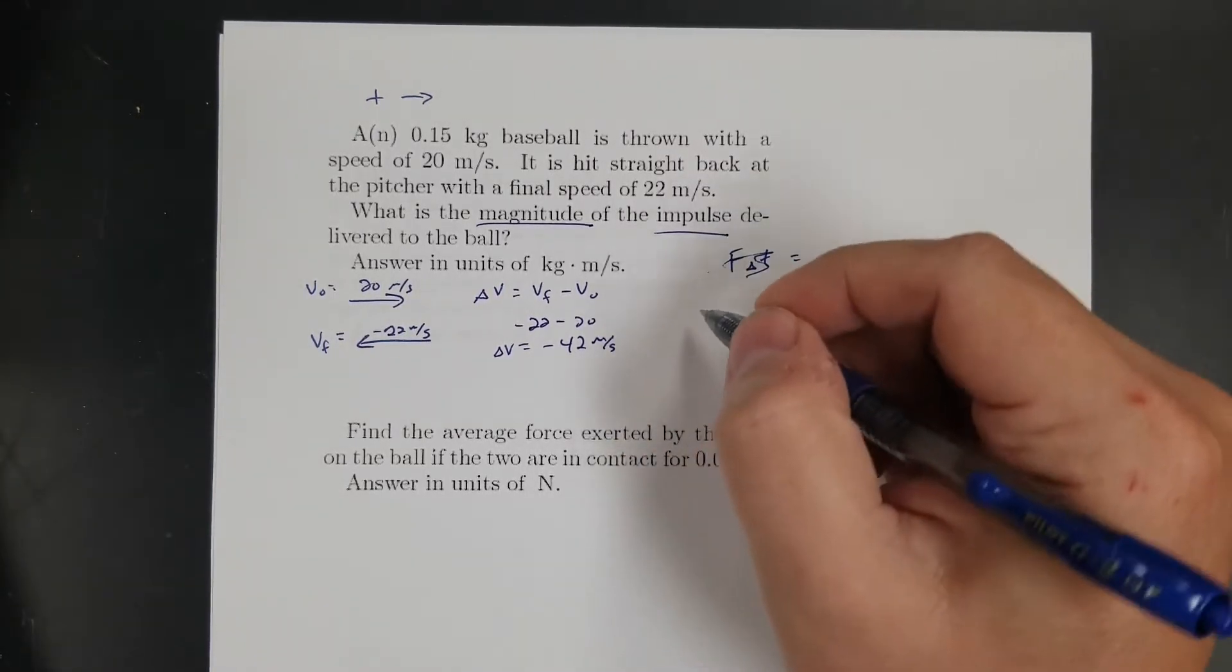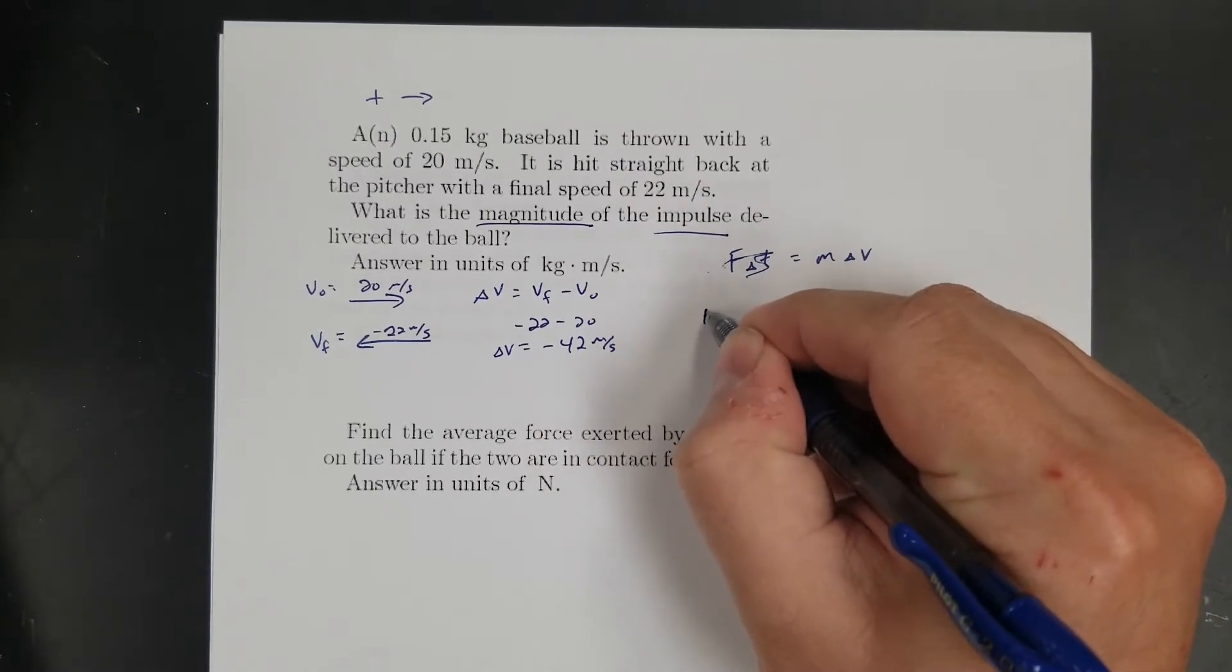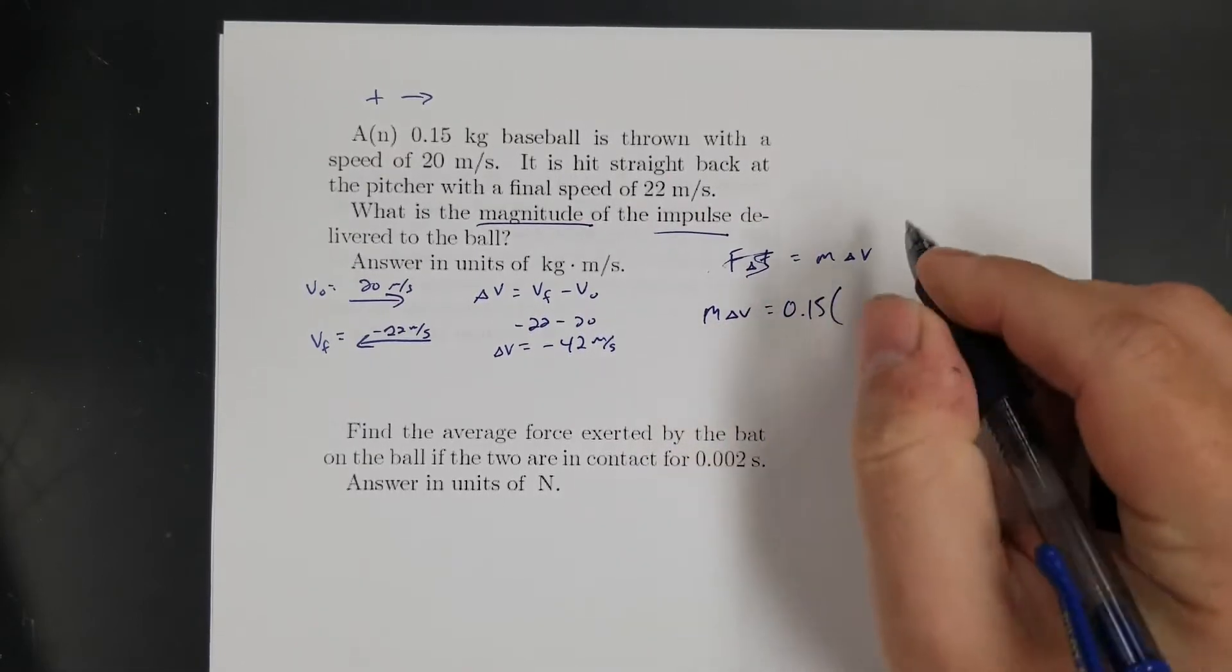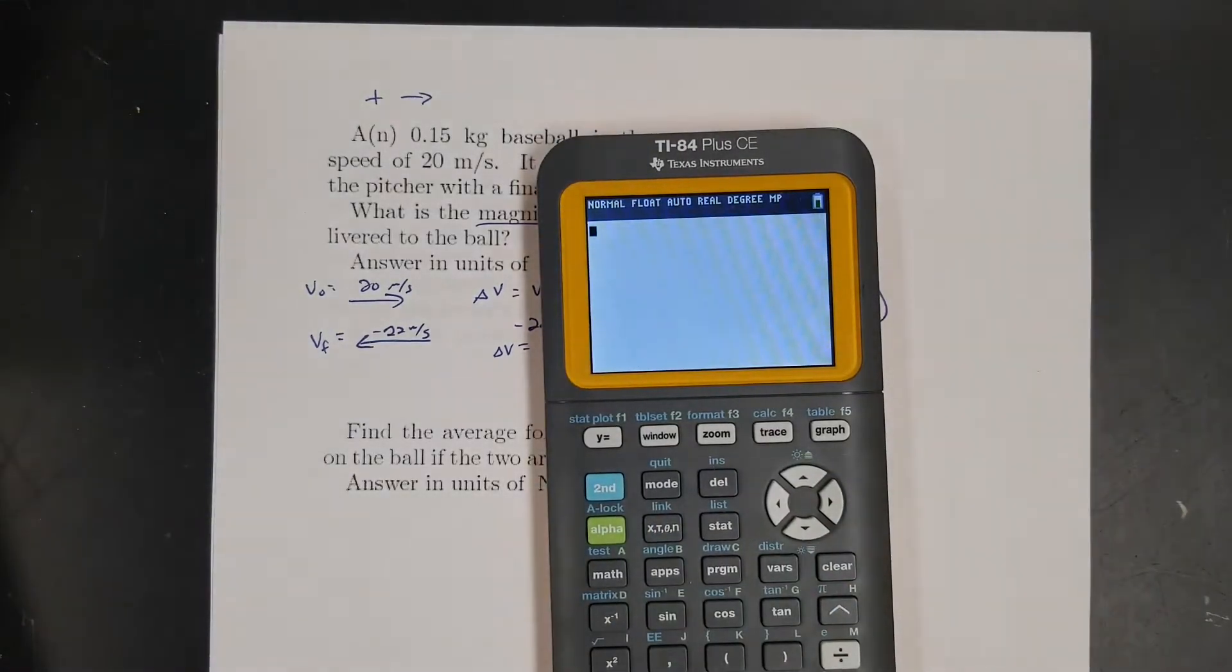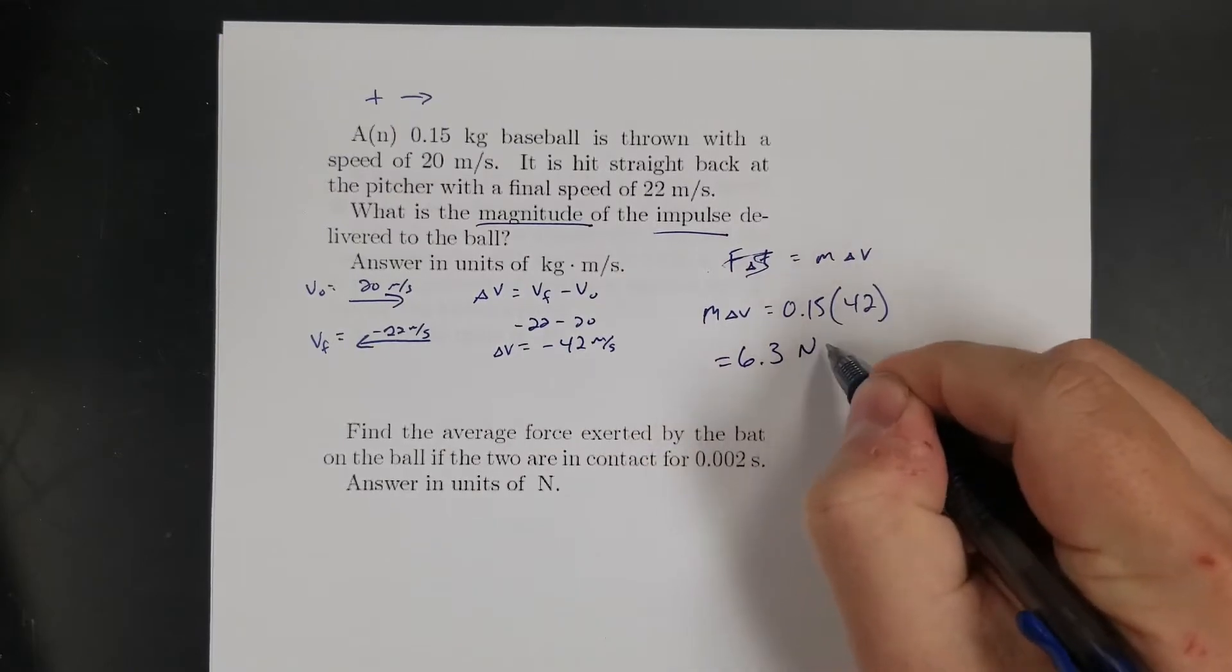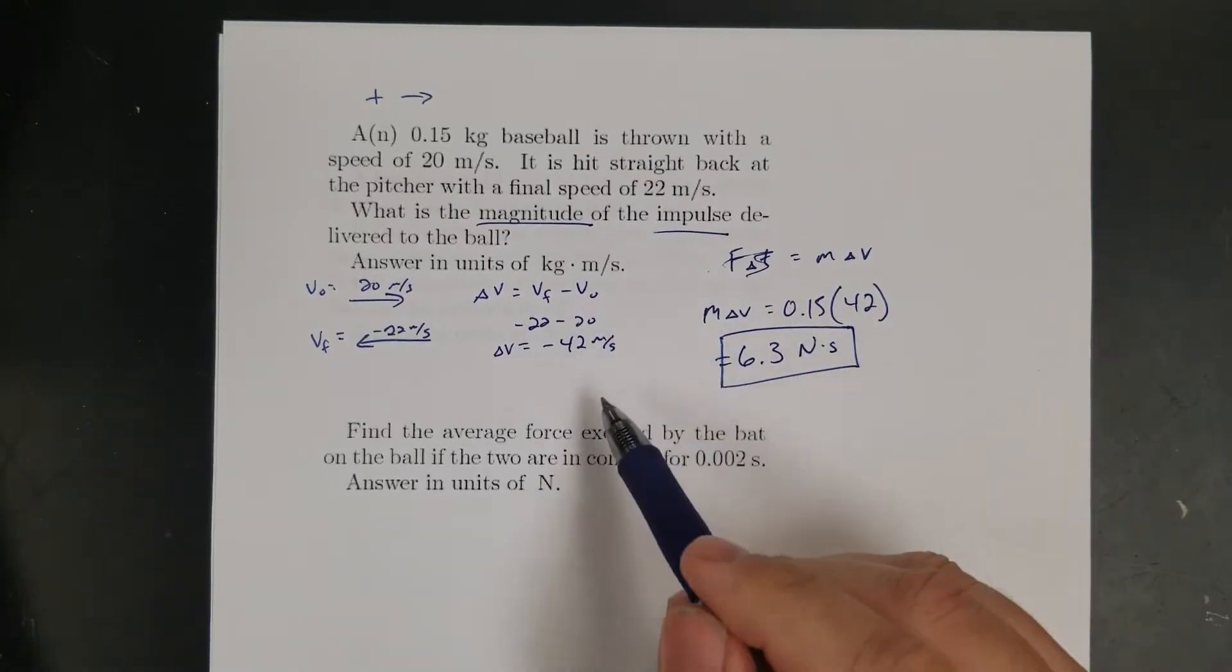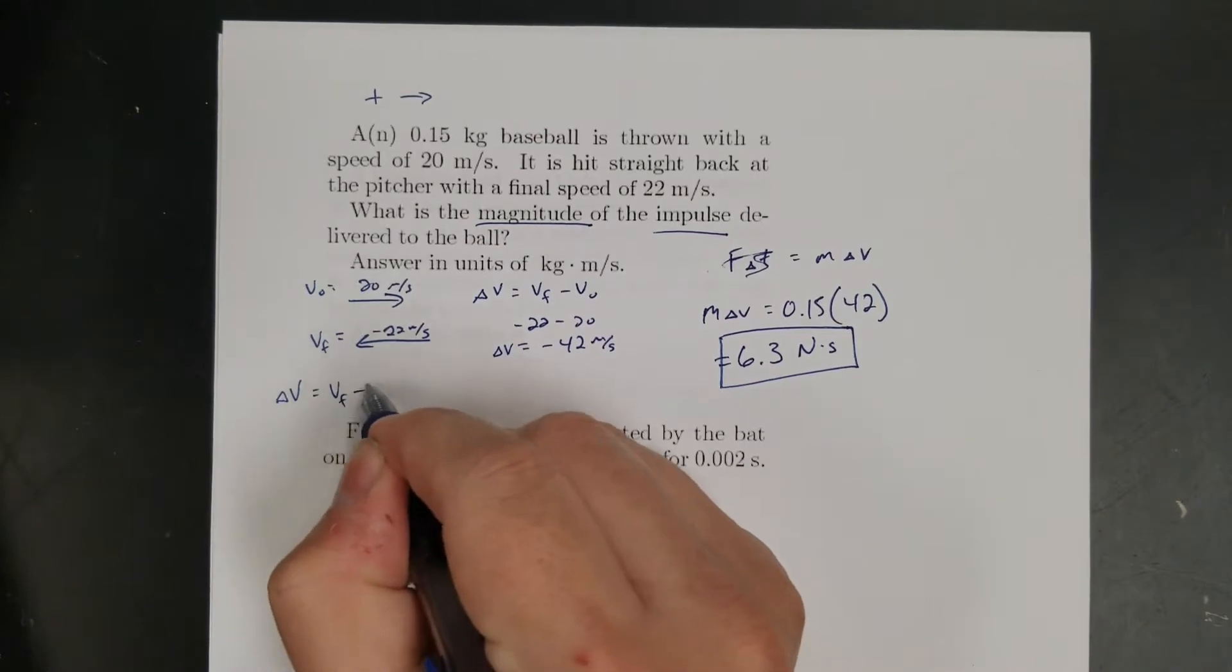So now mass times change of velocity, and I multiply by the mass. So impulse is going to be the mass times the change in velocity. So that's going to be 0.15 times the change in velocity, which was 42. So 0.15 times 42 gives me 6.3. So that's 6.3 Newton seconds, or kilogram meters per second, right?